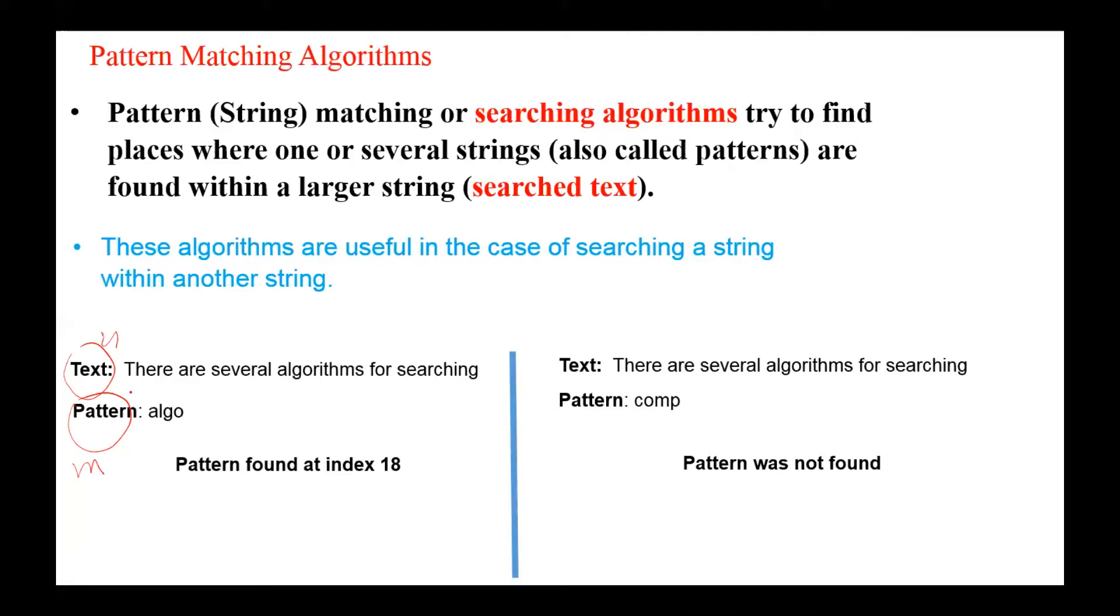For example, here the text is 'there are several algorithms for searching' and the pattern is 'algo', so the output is pattern found at index 18. In this example, the pattern 'comp' was not found in the text, so the output is pattern was not found.